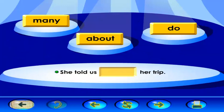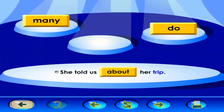This sentence is missing a word. Listen. She told us her trip. Find the sight word that makes sense in the sentence and put it in the open spot. She told us about her trip.